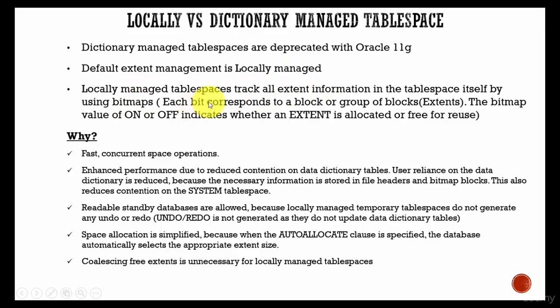Each bit in the bitmap corresponds to a block or a group of blocks. This group of blocks is called an extent. In this bitmap, the value of on or off indicates whether an extent is allocated or free for reuse. So basically, they are using bitmaps to manage extent information, and all this bitmap information is stored within the tablespace itself.